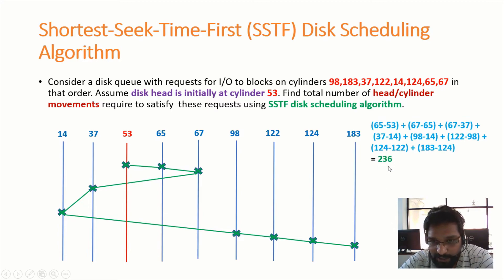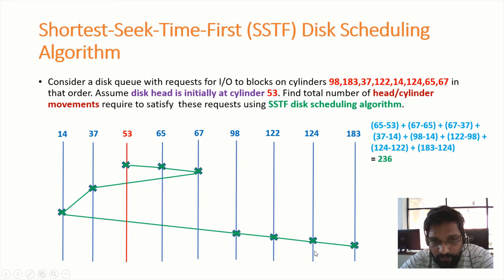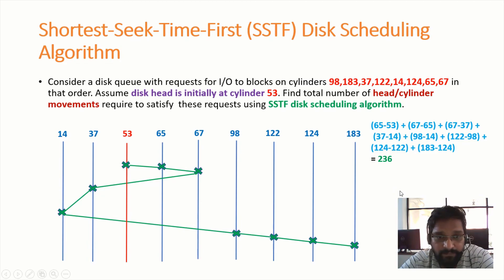One important observation: instead of doing 65 minus 53 and 67 minus 65 separately, we can directly do 67 minus 53. Similarly, instead of doing 67 minus 37 and 37 minus 14, we can do 67 minus 14. And instead of computing 98 minus 14, 122 minus 98, 124 minus 122, and 183 minus 124 separately, we can do 183 minus 14 in a single stretch. You will get the same answer of 238. I hope you understood this. Thanks for watching.